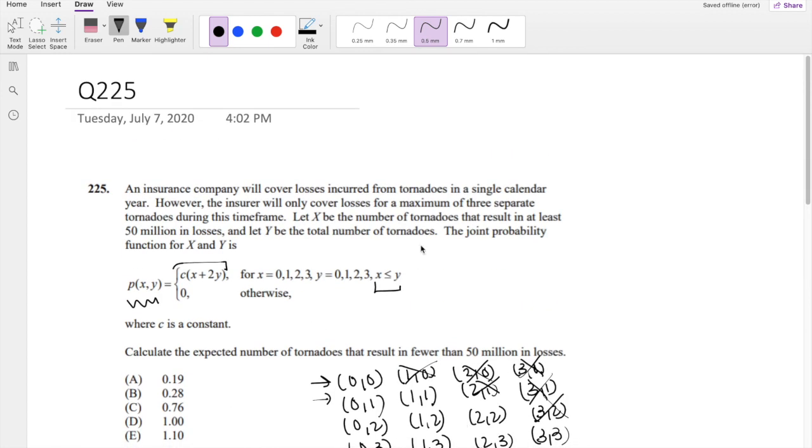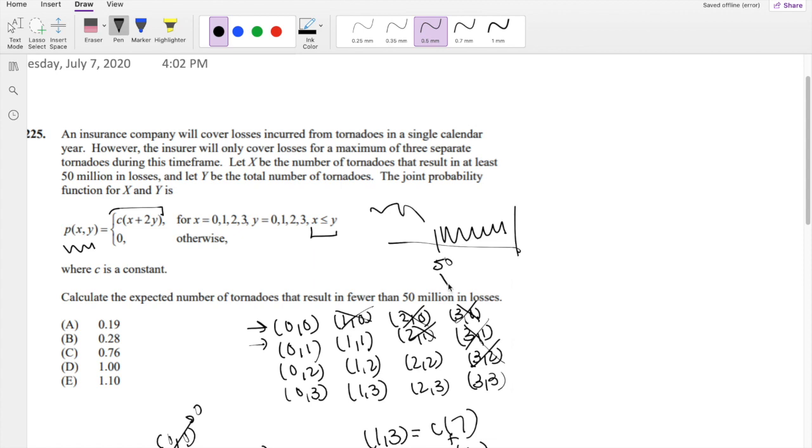And what are they asking for? Calculate the expected number of tornadoes that results in fewer than 50 million in losses. So if X is the number after 50, and Y is the total number of tornadoes, this is the upper limit.